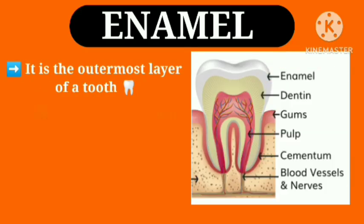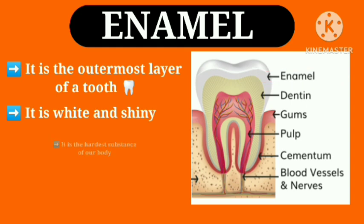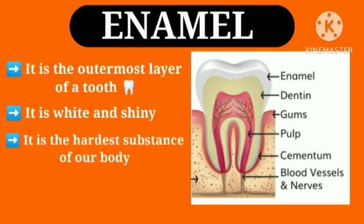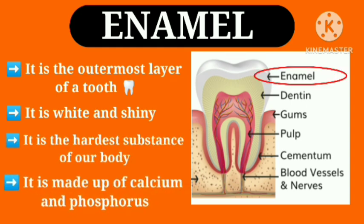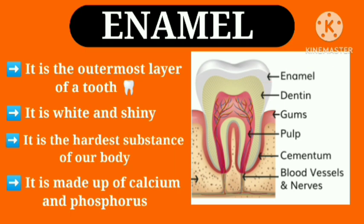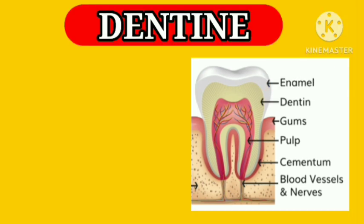Enamel is the outermost layer of a tooth. It is white and shiny. It is the hardest substance of our body and it is made up of calcium and phosphorus.